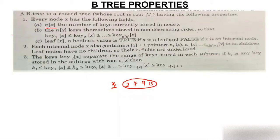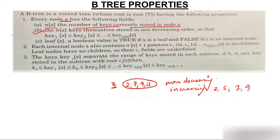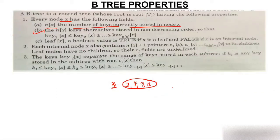The first property: n(x) is the number of keys currently stored in node x. All elements stored in a node are always in non-decreasing order — meaning you cannot have 2, 7, 13, 9; it must be 2, 7, 9, 13. Non-decreasing differs from strictly increasing in that equal consecutive values are allowed, such as 2, 5, 5.